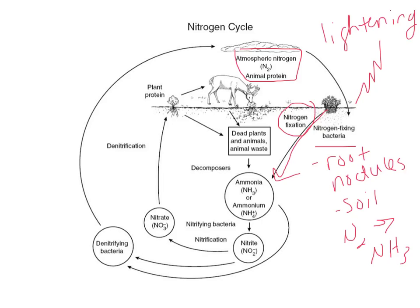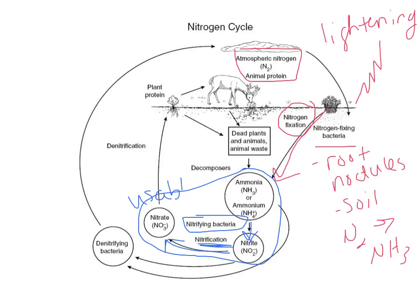Ammonia is still not the usable form of nitrogen we need yet. The next step is to take that ammonia and convert it into nitrites and nitrates. That process — the conversion of ammonia into nitrites and nitrates — is called nitrification, and it's done by our nitrifying bacteria. They convert it into the usable form. Nitrates are finally the usable form, and so the plants are going to take that usable nitrogen and assimilate it. Assimilation is the uptake of that nitrogen into the plant roots, so now the plant has nitrogen to make enzyme proteins, repair its DNA, and make RNA.